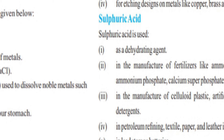Detergents are used for cleaning. Drugs means medicines. Paints are for colors. Plastic and artificial silk are mostly used for making fabric and plastic materials like bottles. Use number four: in petroleum refining, and the textile, paper, and leather industries. Use number five: in lead storage batteries, which are mostly used in vehicles — H2SO4 is found in them.